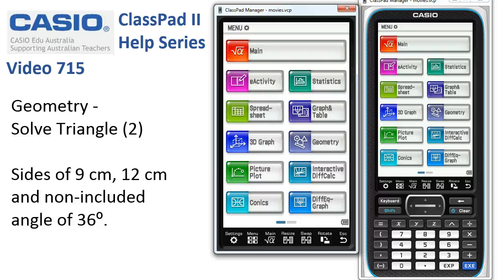Geometry solved triangle 2. In this case we're going to have a look at an ambiguous triangle where more than one is possible when we're drawing it in geometry.